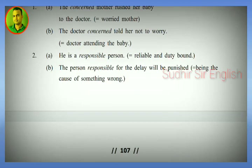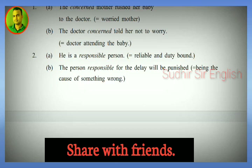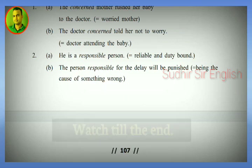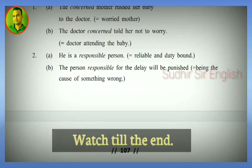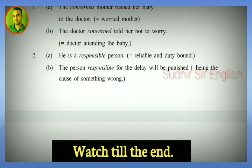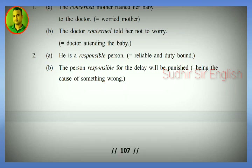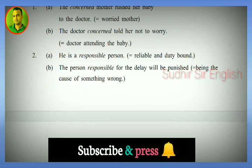'He is a responsible person' — here 'responsible' before the noun means 'reliable and duty-bound.' But: 'The person responsible for the delay will be punished' — here 'responsible' after the noun means 'being the cause of something wrong.'